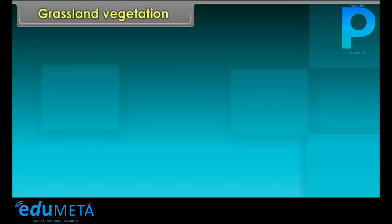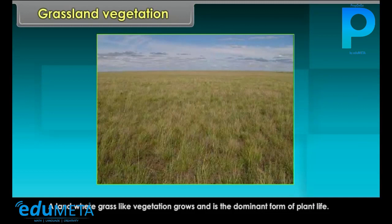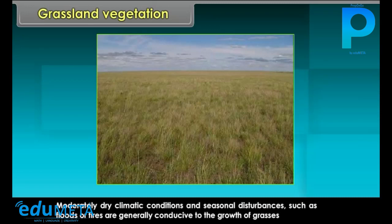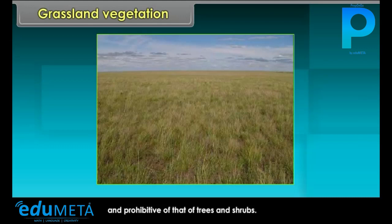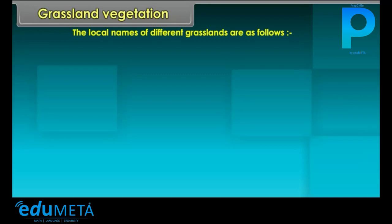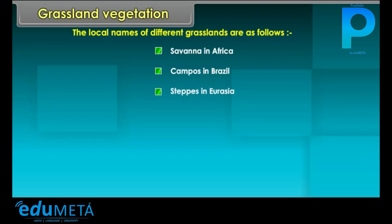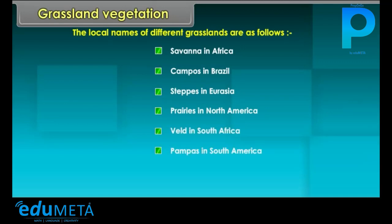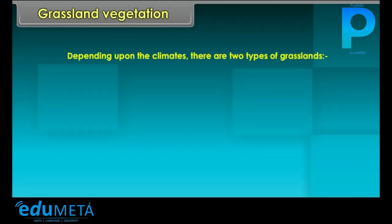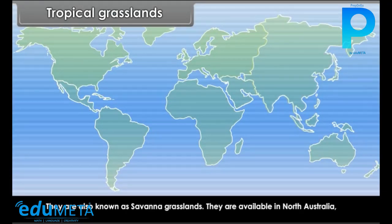Grassland Vegetation: A land where grass-like vegetation grows and is the dominant form of plant life. Moderately dry climatic conditions and seasonal disturbances such as floods or fires are generally conducive to the growth of grasses and prohibitive of trees and shrubs. The local names of different grasslands are: Savannah in Africa, Campos in Brazil, Steppes in Eurasia, Prairies in North America, Veld in South Africa, Pampas in South America, and Downs in Australia.